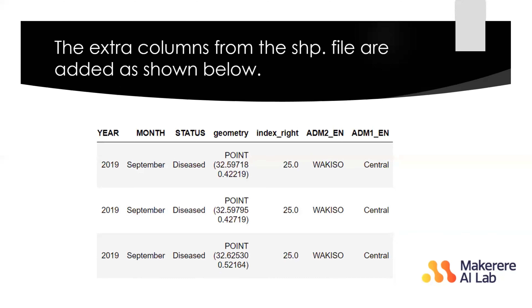After the spatial join, you come up with a merged data frame combining farmer information with geographic data. For example, you can see that there's a farmer who sent in information in 2019 September that the crop was diseased, and that they were in Wakiso, coming from the central region.